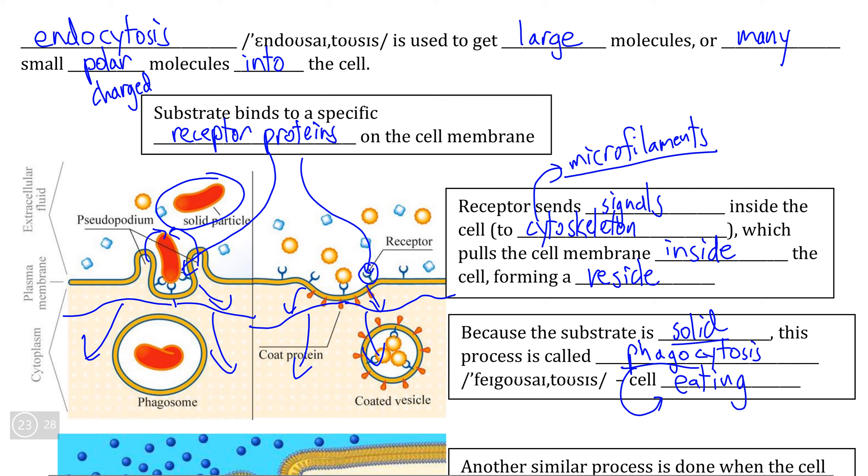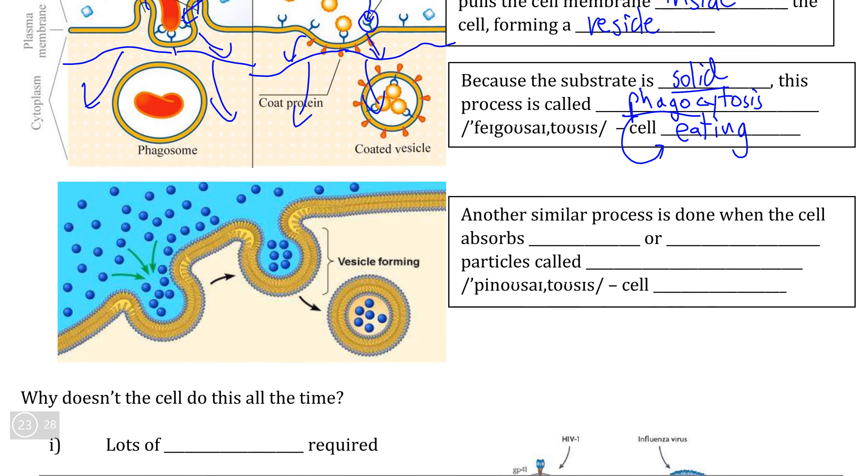we call this particular form of endocytosis phagocytosis because the prefix phago in Greek literally translates to eating. In fact, there are specific types of cells whose job it is to wander around your bloodstream and eat any solid particle that doesn't belong there, and these are what we call phagocytes, which are a type of white blood cell.